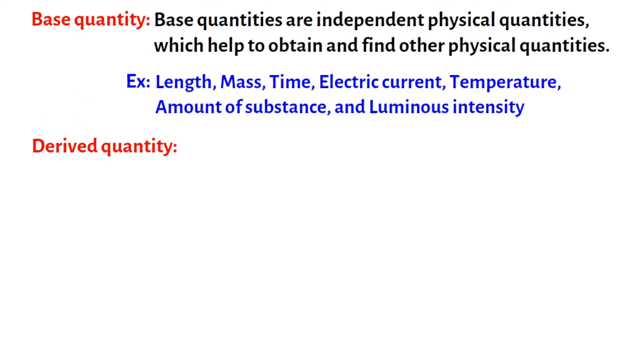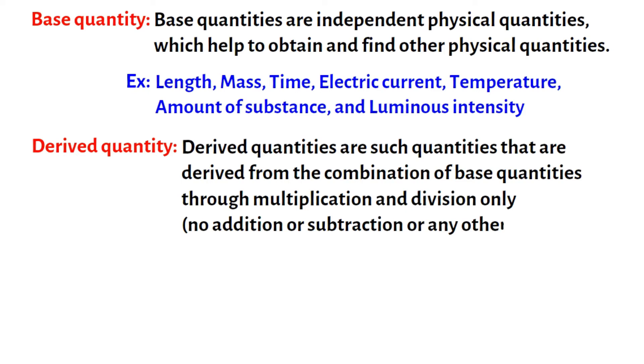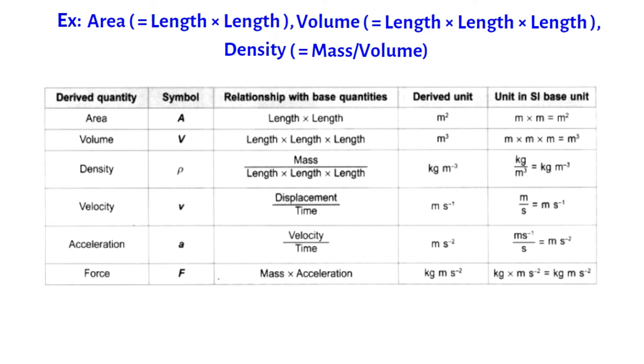Derived Quantity. Derived quantities are such quantities that are derived from the combination of base quantities through multiplication and division only, no addition or subtraction or any other sign. For example, area is a derived quantity because it is measured by multiplying length by length, similarly volume as length into length into length, and also density is measured as the mass of the object divided by its volume. There are many such derived quantities that we will face later. For now, here is a small table showing some derived quantities and their relation with base quantities.